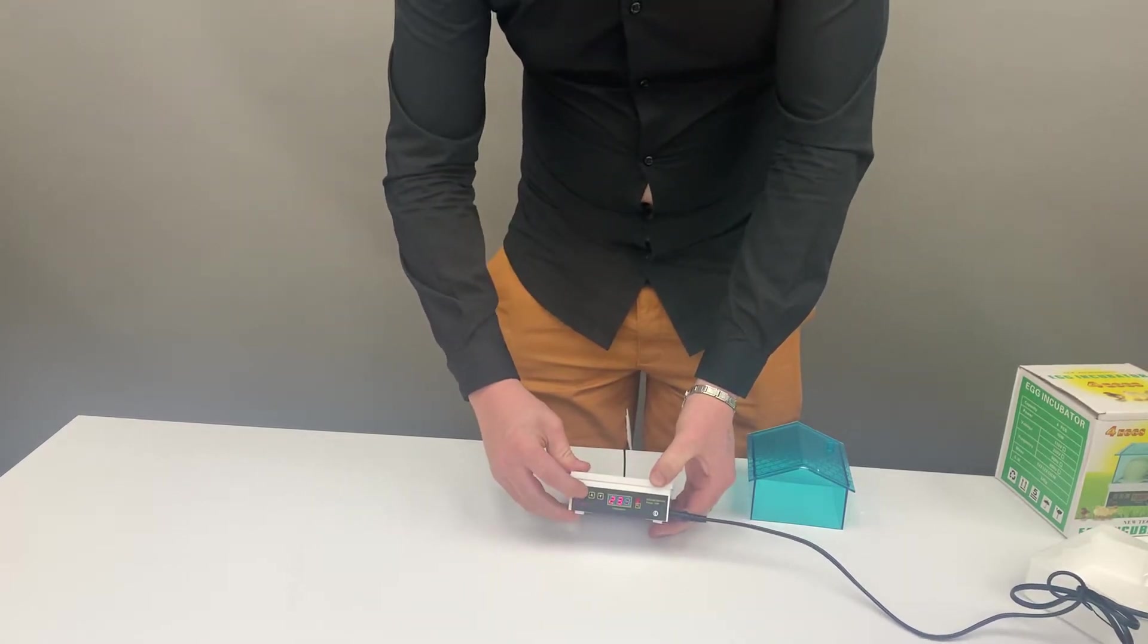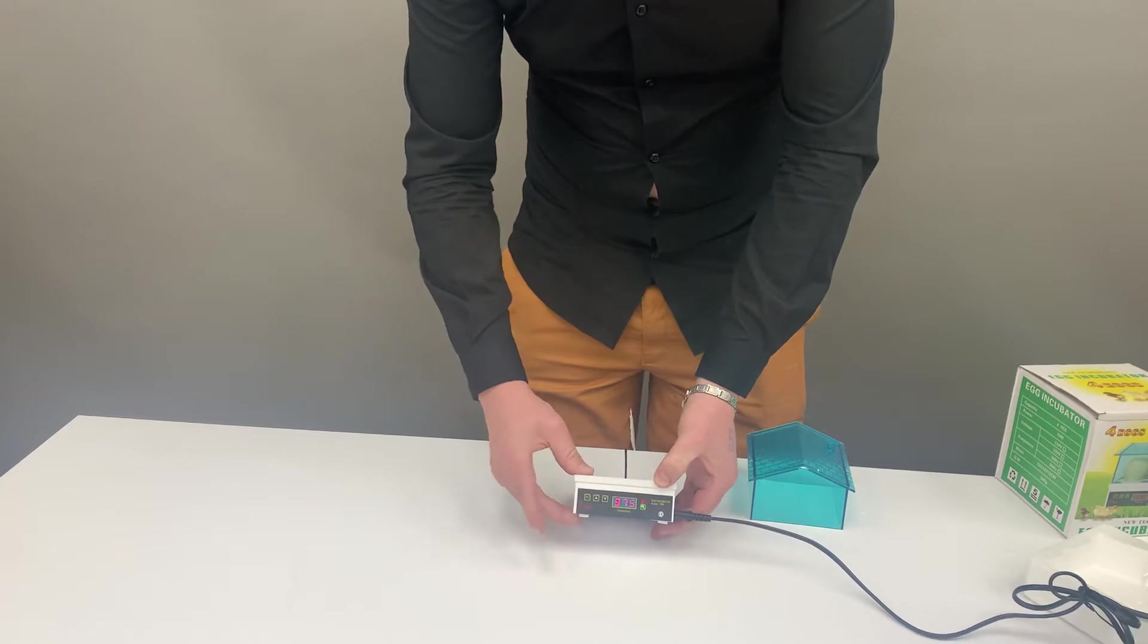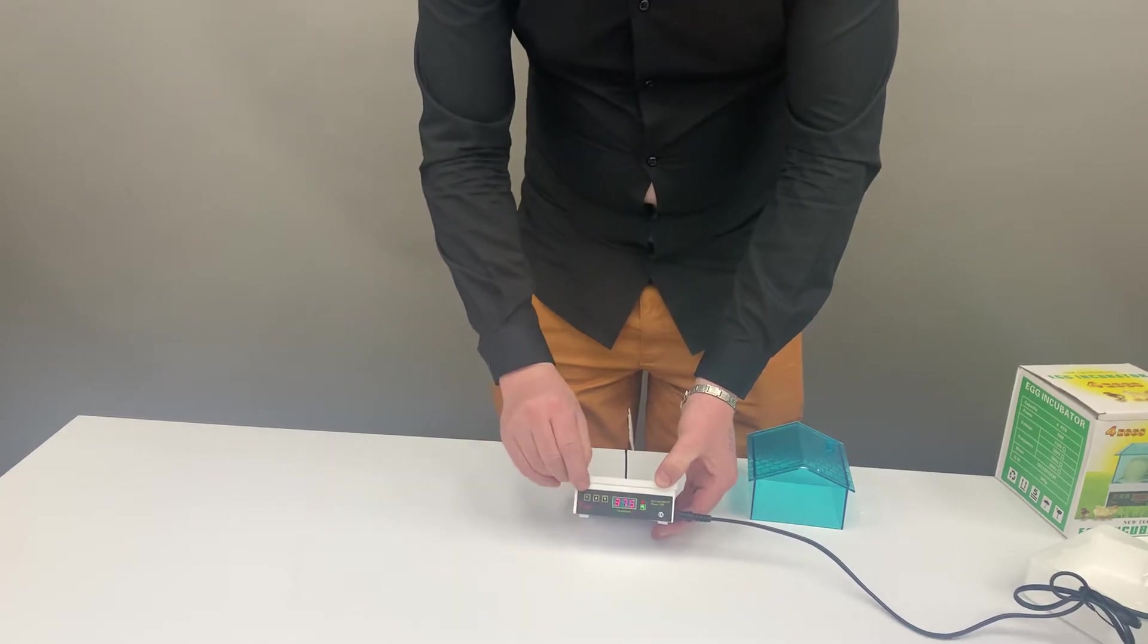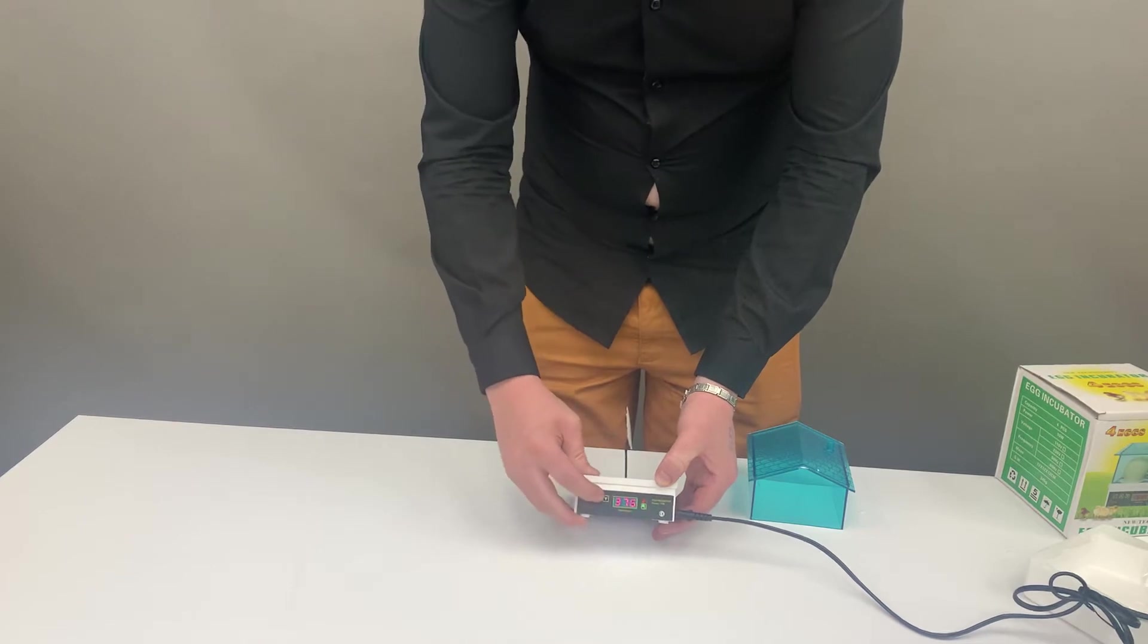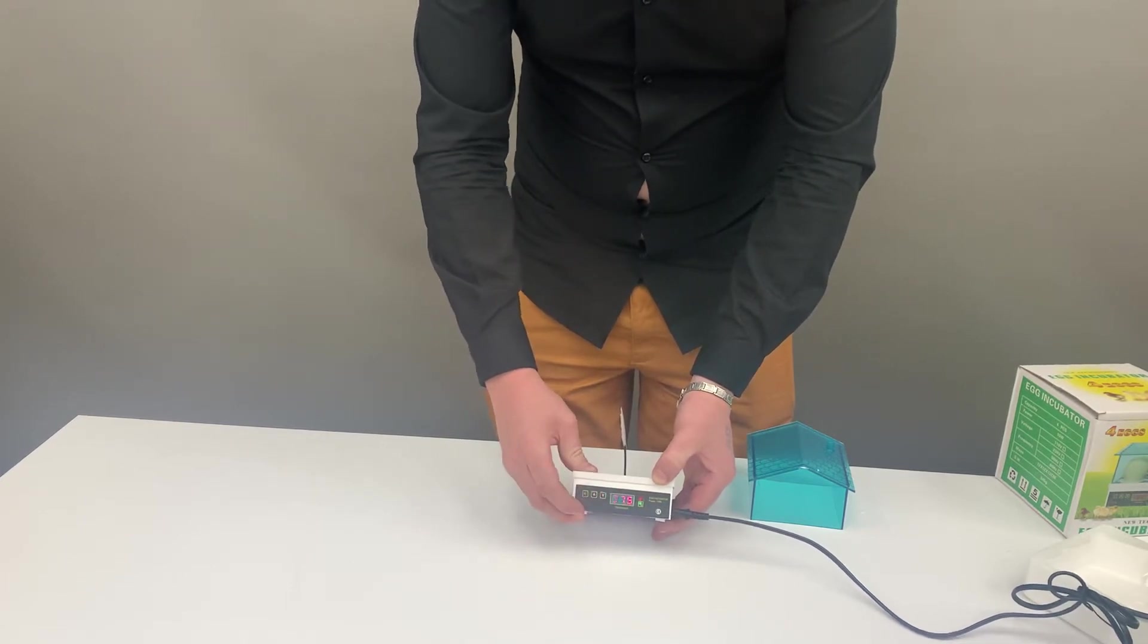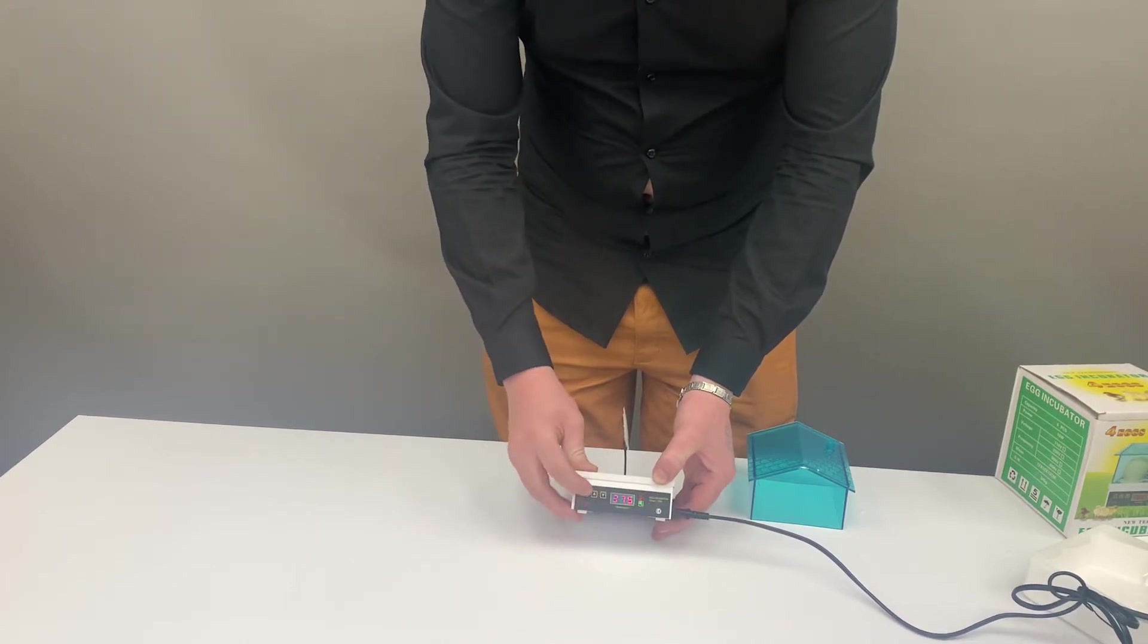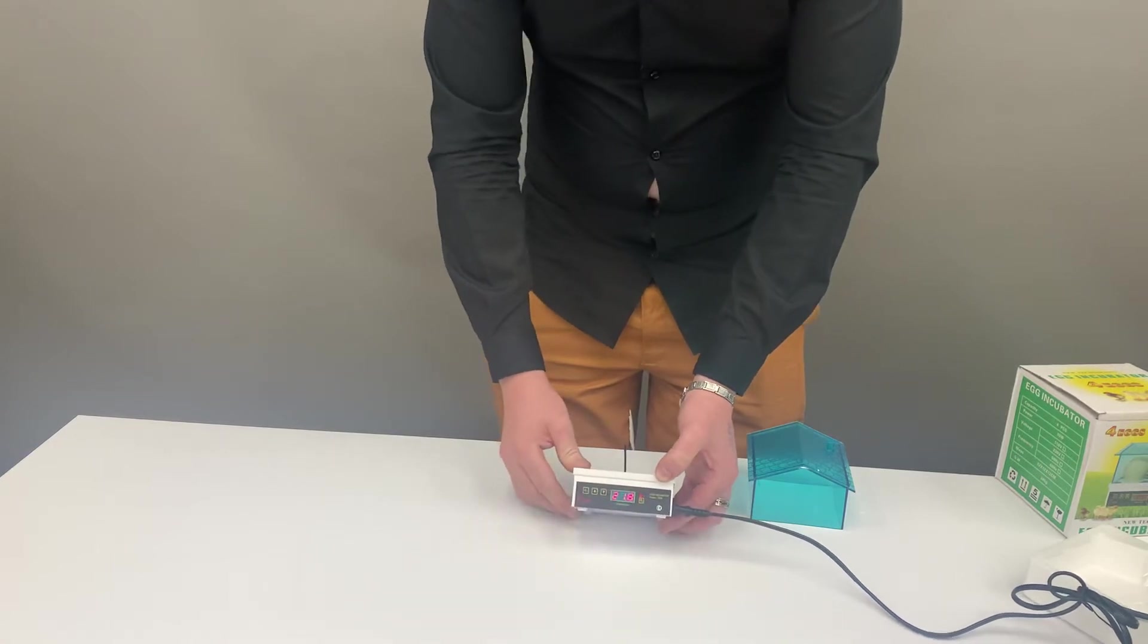To test that the temperature has been set correctly, push your set button once on the left-hand button. Use plus or minus, or up or down arrow, to get to the required temperature which is 37.5°C. Then press set again to confirm that temperature.